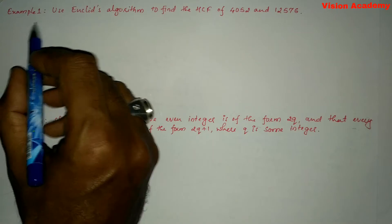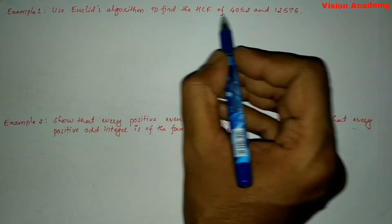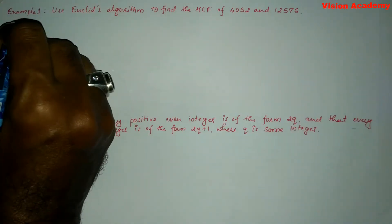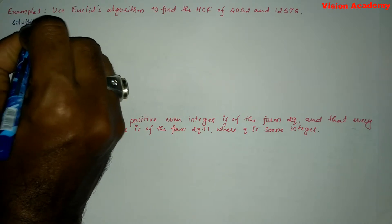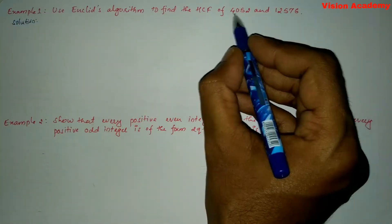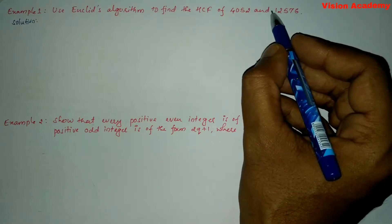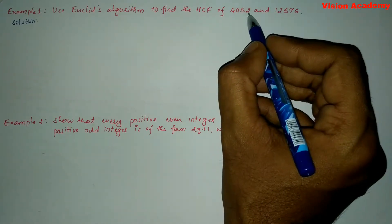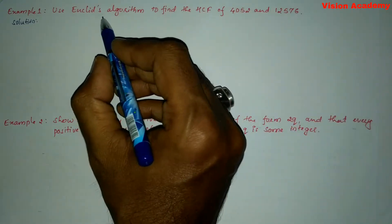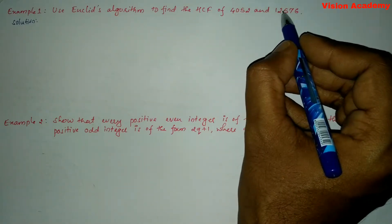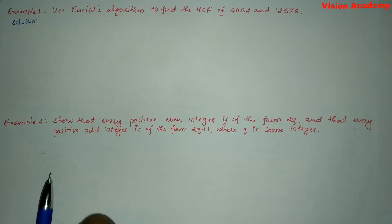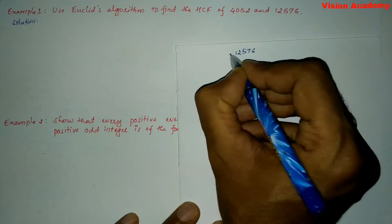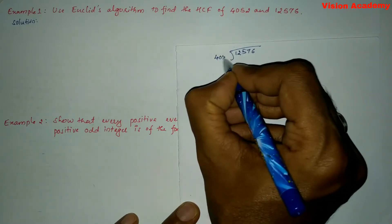Let us solve Example 1: Use Euclid's algorithm to find the HCF of 4052 and 12576. Here we need to find the highest common factor of these two positive integers. We can clearly see that 12576 is greater than 4052, hence we are going to use Euclid's division algorithm.